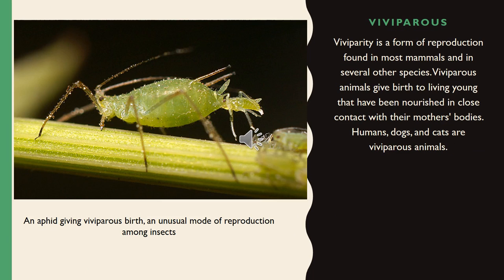Viviparity is a form of reproduction found in most mammals and in several other species. Viviparous animals give birth to living young that have been nourished in close contact with their mother's bodies. Humans, dogs, and cats are viviparous animals.